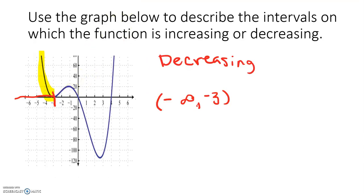We then notice that it is increasing from negative 3 up until x is negative 1. So increasing from x equals negative 3 to x equals negative 1.